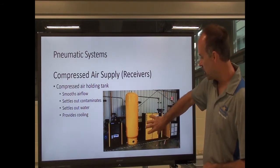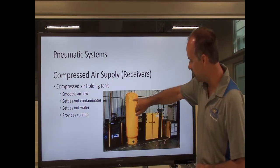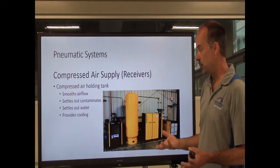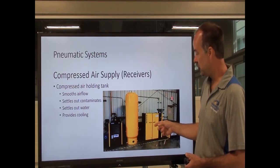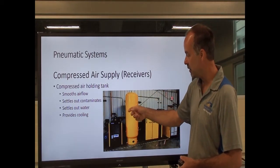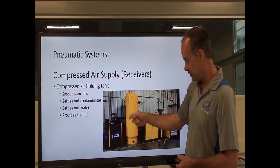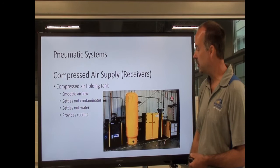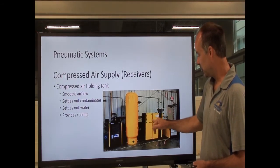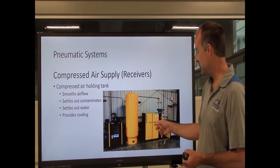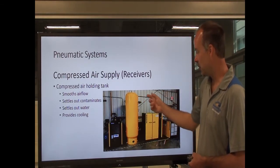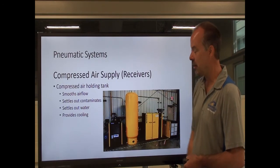Receivers: in this setup we have an air compressor, and leaving the air compressor we come to a receiver. A receiver is just like a large tank that holds compressed air. This allows you a cushion by smoothing out the airflow so you don't have surges — we pressurize this tank, and coming off the tank we have a regulator to maintain pressure on our outlet side. Also, sometimes air compressors have oil inside that gets sent to the outlet of the compressor; the receiver allows a place for that oil to settle out to the bottom, giving you cleaner air coming out.